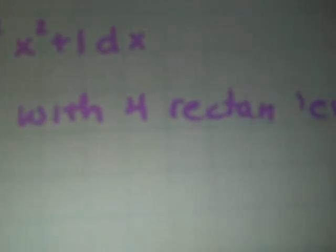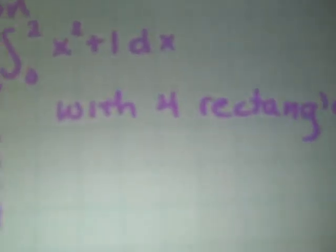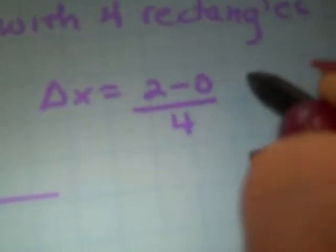We're going to approximate the right-hand rule with four rectangles. Here's the picture of the curve. We need to find our delta x, and you'll see that our delta x is still the same. However, the endpoint that we take first is going to be different. Our delta x is 1 half.